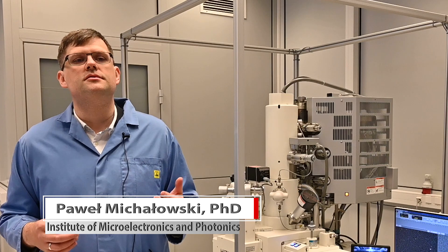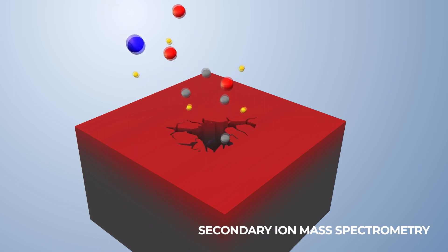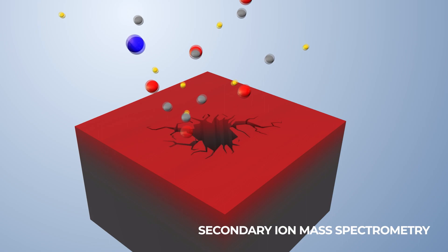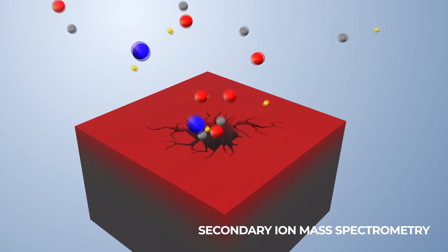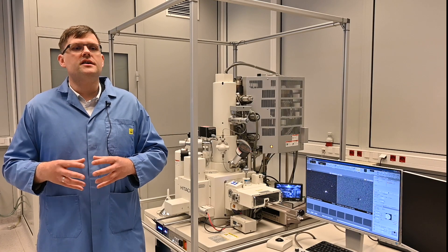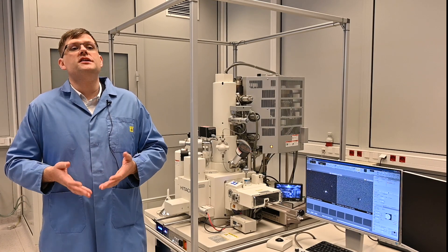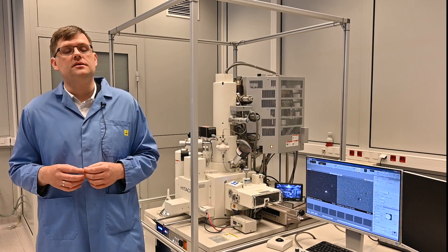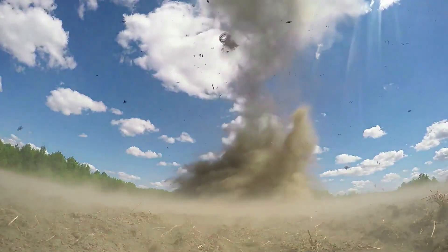When we analyze the sample, we bombard it with a primary ion beam, and these ions cause a lot of phenomena. They start to hit the atoms from the sample, they transfer part of the kinetic energy, and then all the atoms from the sample are set in motion and are sputtered away from the sample.